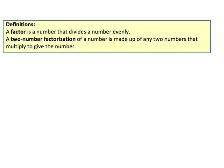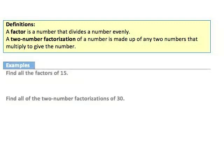Now let's look at some definitions. A factor is a number that divides a number evenly. A two-number factorization of a number is made up of any two numbers that multiply to give that number. Our first example: find all the factors of fifteen. Starting with one times fifteen, then checking two — two won't go into fifteen. But three will: three times five gives fifteen. Checking four — four doesn't divide into fifteen. So the factors of fifteen are one, three, five, and fifteen.